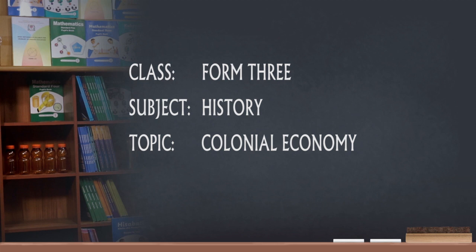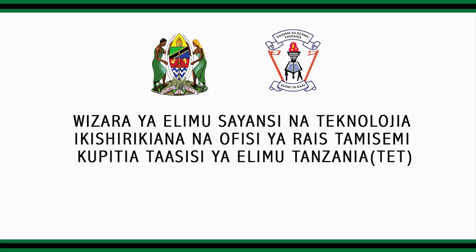Africans were producing what they did not consume and consuming what they did not produce. Number 2: Establishment of weak and small processing industries. The few factories that were established in Africa were for import substitution, because colonies had to remain producers of raw materials which were highly needed to feed industries in Europe.